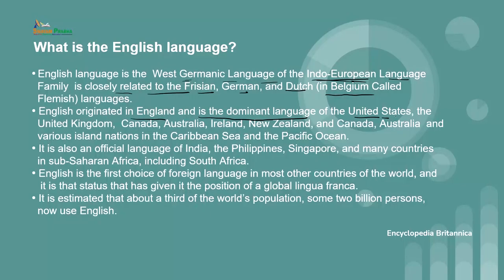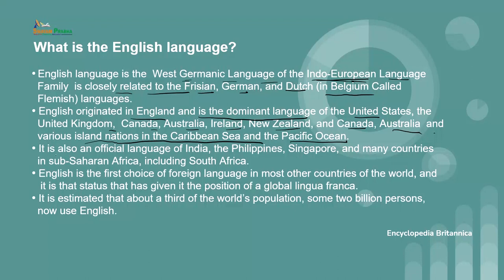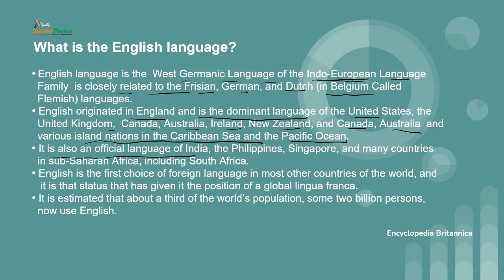English is considered the dominant language in countries like the United States, United Kingdom, Canada, Australia, Ireland, and New Zealand, as well as various island nations in the Caribbean Sea and the Pacific, where English is considered the main native language. It is also an official language of India. Since Britishers invaded India and after independence we realized the importance of English education, and wanted to connect India with the Western world, English was introduced as an important subject in all classrooms. It is also an official language in the Philippines, Singapore, and many countries in sub-Saharan Africa including South Africa.